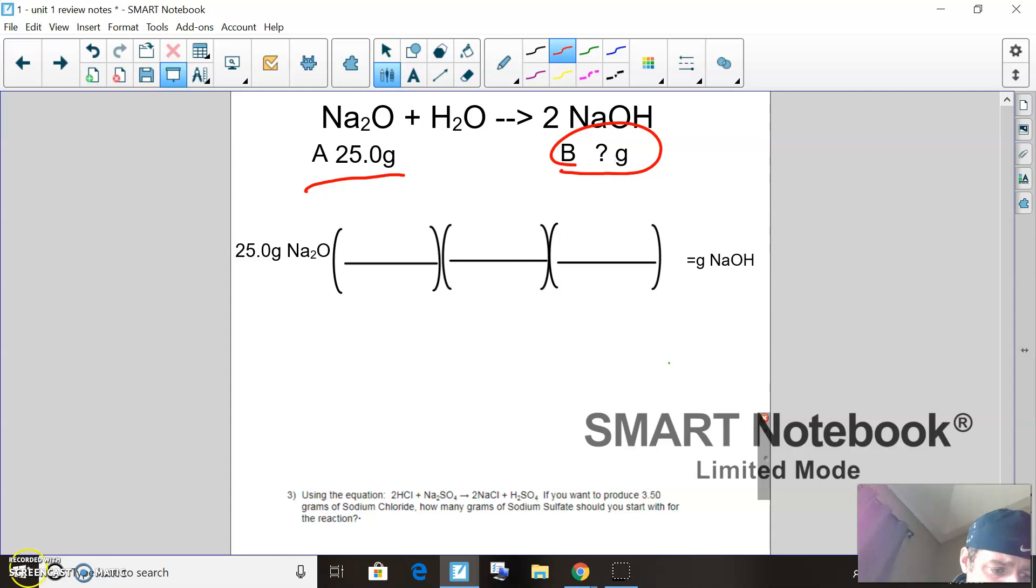There you go. So all I did to figure out the brackets here is just use my map. This 61.97—I just took two sodiums and one oxygen and I added it up. And then one Na, one OH, and added it up.